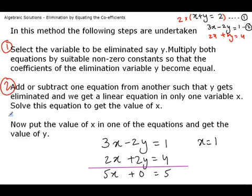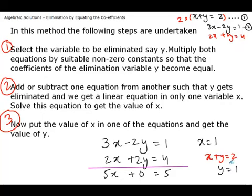The third step is to put the value of x into one of the equations and get the value of y. If we put x equal to 1 in the first equation, which was x plus y equals 2, then y is equal to 1. So the answer is x equals 1 and y equals 1.